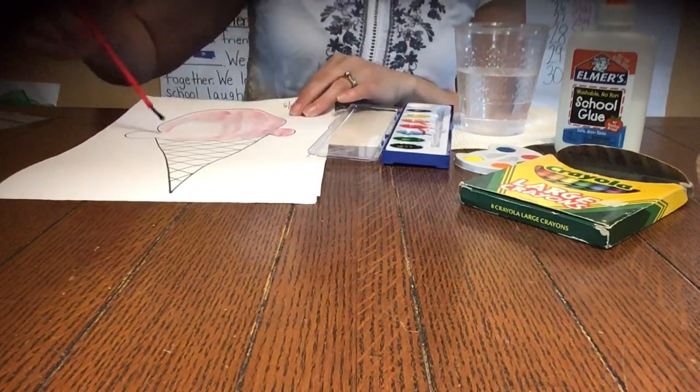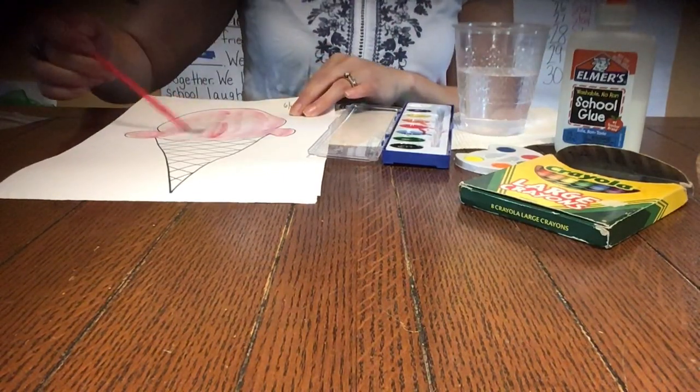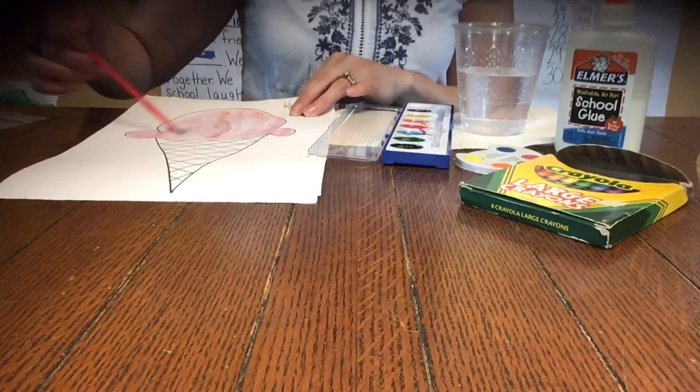What's your favorite kind of ice cream? Chocolate. Chocolate would be brown. Vanilla, maybe like a light yellow.